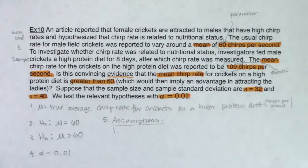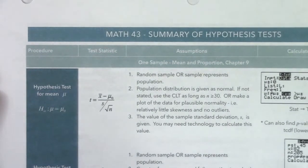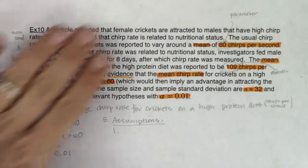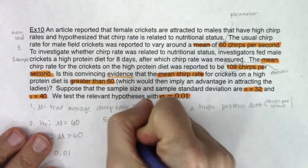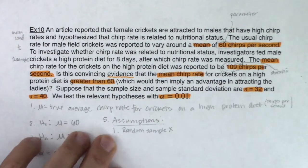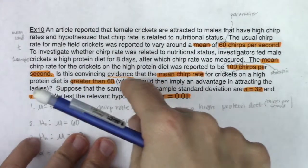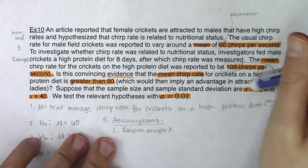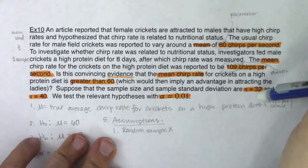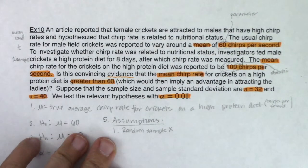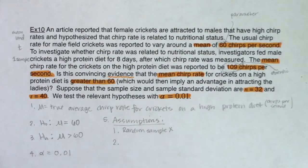For assumption one — did I have a random sample? If I buzz through the entire problem, there's nothing about these crickets being selected at random. Crickets are jumpy little critters and it is so hard to get a random sample of them. It's not a deal-breaker, but I wouldn't know how to bias my sample intentionally either — I'm just going to pick a bunch of crickets, shove them full of protein, and see how fast they're chirping. Assumption two is the deal-breaker: normality.